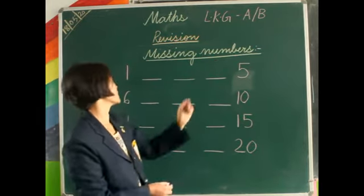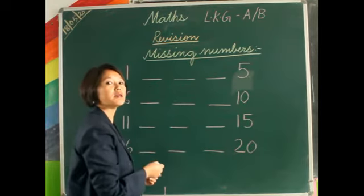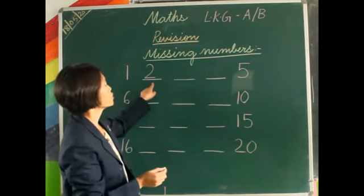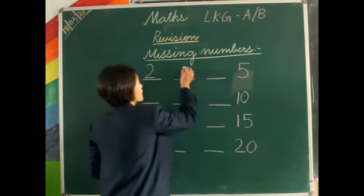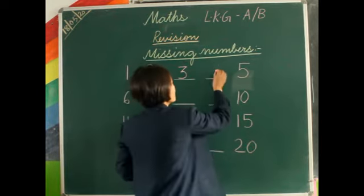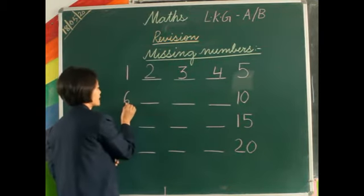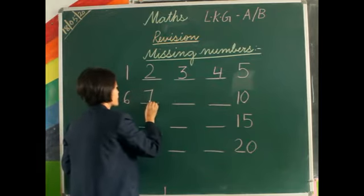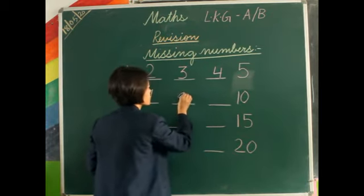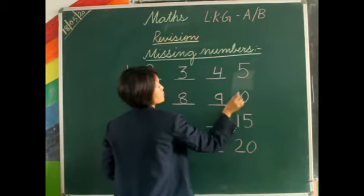So here we go — missing numbers. 1 is there; after 1, which number will come? Number 2. Then 2 and after 2 is 3. Number 3 and number 4. After 4 is 5. Then 6, 7. After 7 is 8. Then 9 and 10.